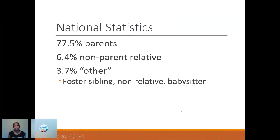When we look at who is most likely to perpetrate abuse: parents, and again, because we're talking about these young nonverbal children, who has most access to them? Their parents. Who are most responsible for them? Their parents. So they're most likely to be determined as the reason this child has been abused or neglected. Then we have non-parent relatives — grandma, aunties, uncles — and then others who are non-relatives: babysitters, foster siblings, foster parents.